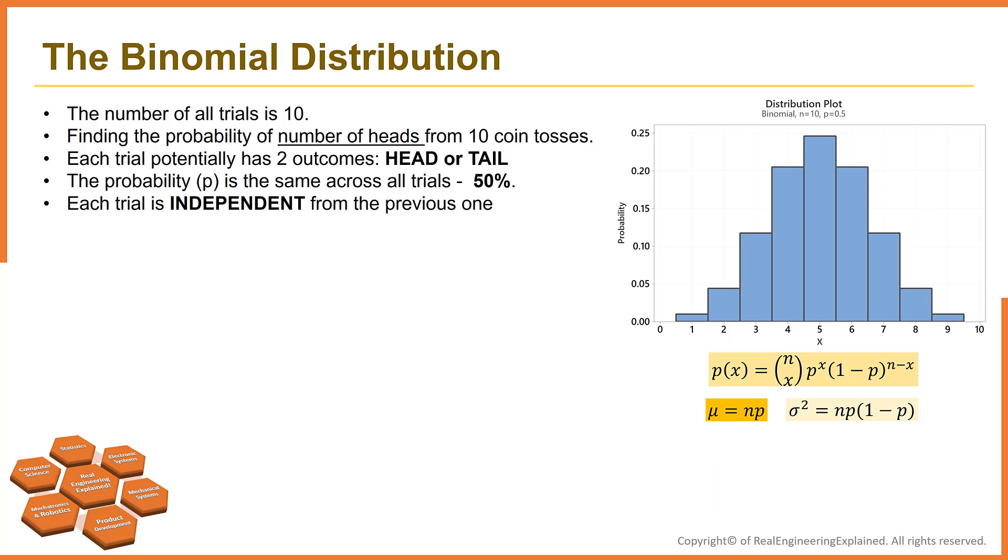In binomial distribution, the mean or expected value is equal to n multiplied to p. And the variance can be calculated by this equation.